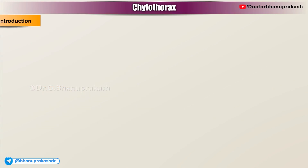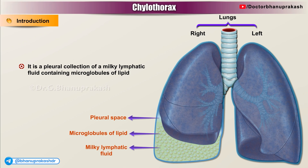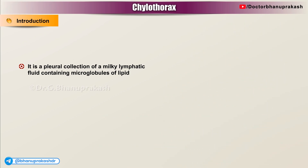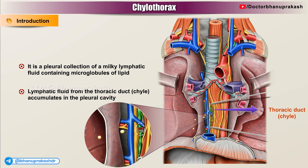Chylothorax. Introduction. It is a pleural collection of a milky lymphatic fluid containing microglobules of lipid. A simple way to say it is lymphatic fluid from the thoracic duct or chyle accumulates in the pleural cavity.